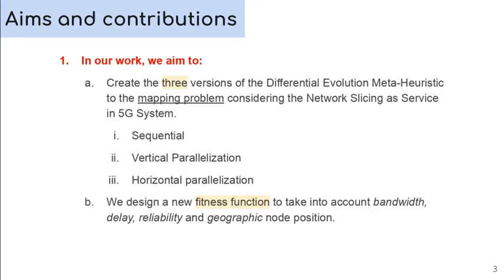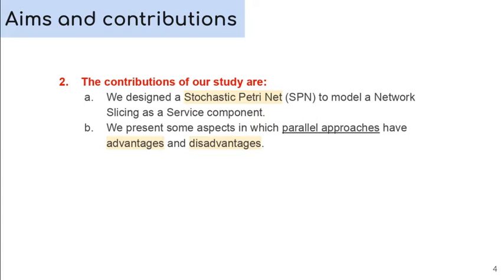In our work, we aim to create three versions of the Differential Evolution Metaheuristic for the mapping problem, considering network slicing as a service in 5G systems. The first version is sequential, and the second and third versions are parallelized. We design a new fitness function to account for bandwidth, delay, reliability and geographic node position. We design a stochastic P3Net to model network slicing as a service components, and present aspects in which parallel approaches have advantages and disadvantages.